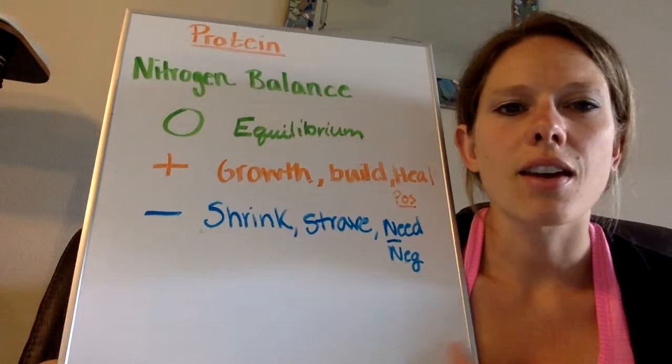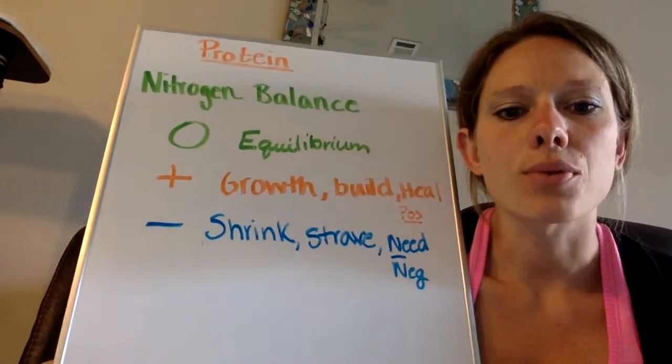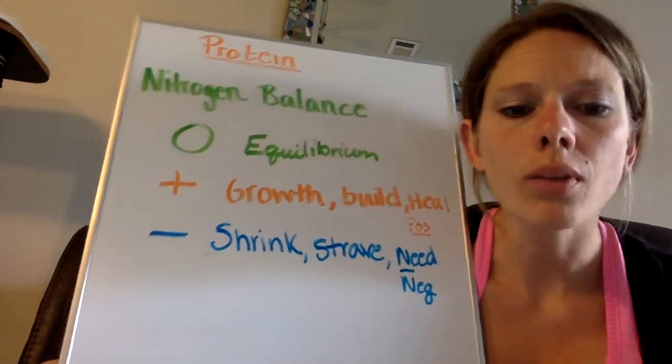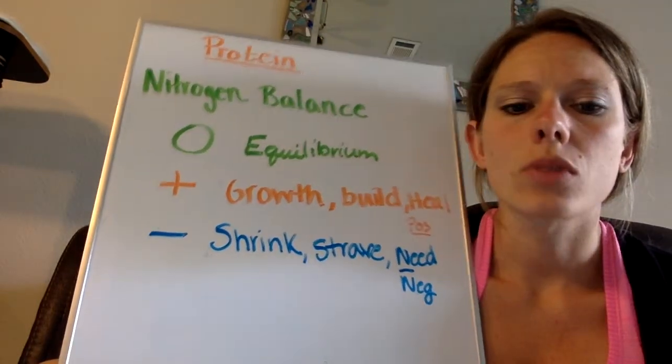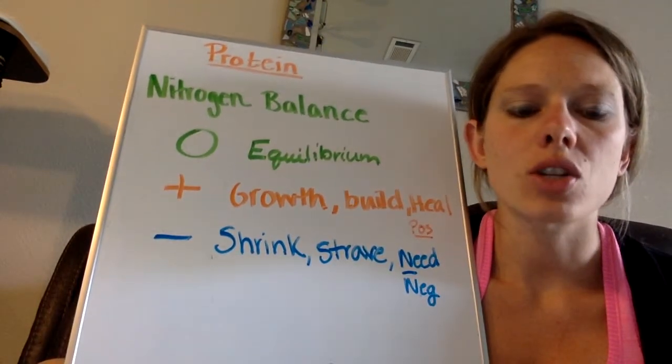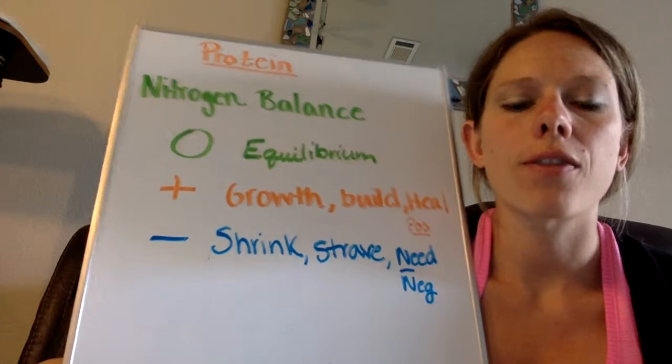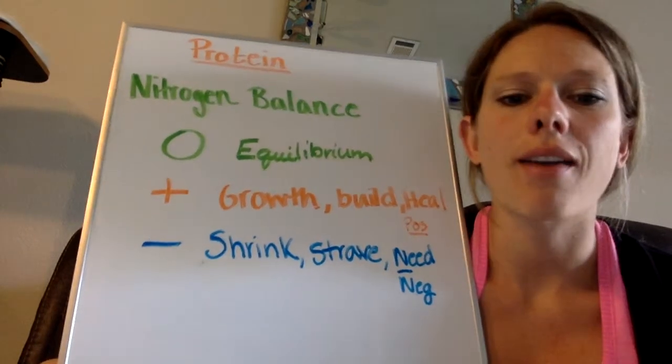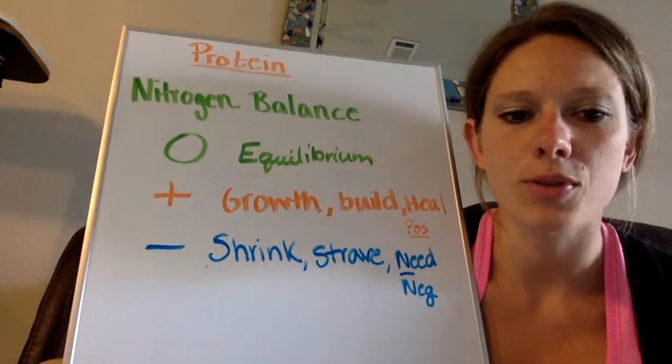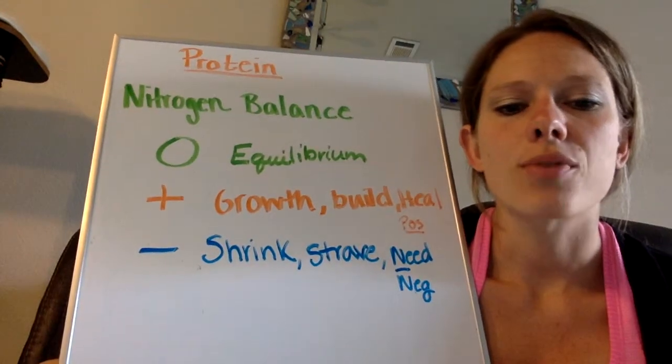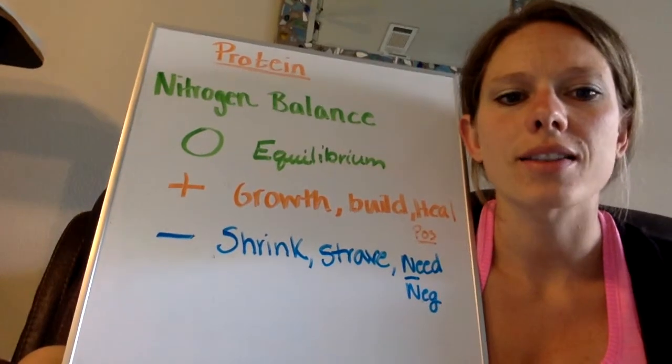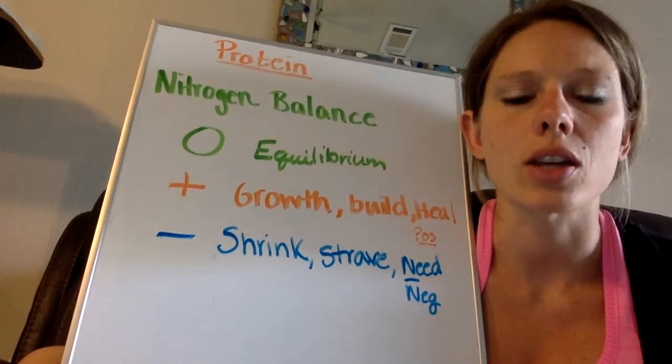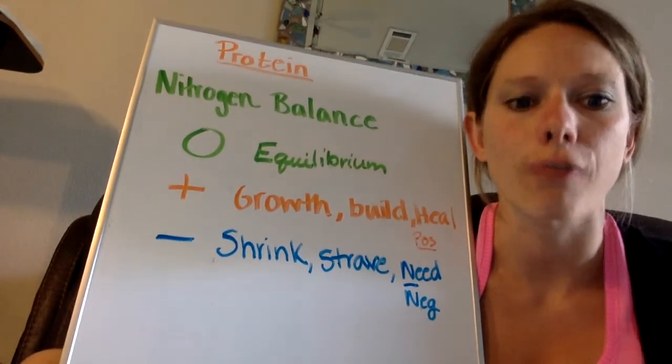And that number is basically kind of telling us the protein quality and how digestible it is. So the net protein utilization, if there's a protein that is entirely digested and absorbed, that net protein utilization is going to be very similar to a protein that has, or that number I guess should be very similar to biological value.